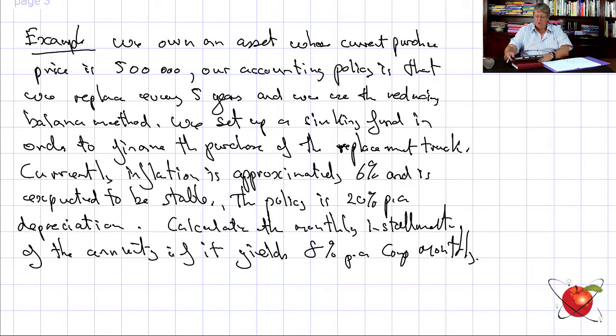The truck currently costs 500,000. In five years' time we're going to buy a new one, because the truck's mileage is used up — it becomes unreliable and costly to maintain. The price of the new truck will inflate upward over five years, while the value of the existing truck depreciates downward.